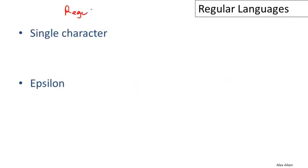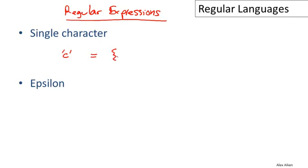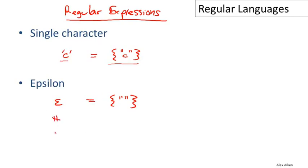To define the regular languages, we generally use something called regular expressions. Each regular expression denotes a set. There are two basic regular expressions. If I write the single character C, that's an expression, and what it denotes is a language containing one string — the single character C. Another basic building block is the regular expression epsilon, which is the language containing just a single string, this time the empty string. It's important to keep in mind that epsilon is not the empty language — it is a language that has a single string, namely the empty string.